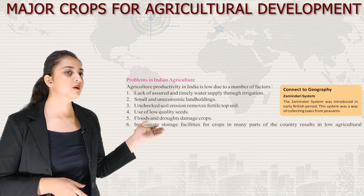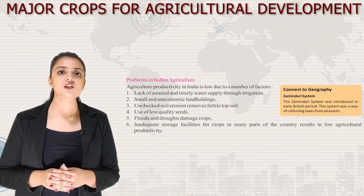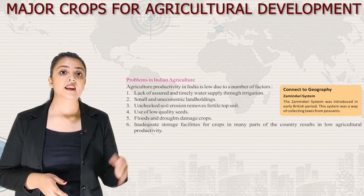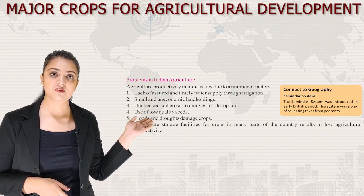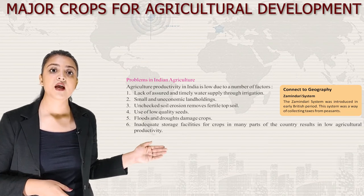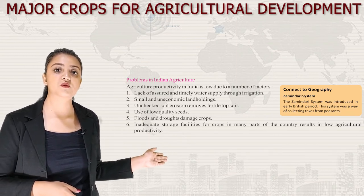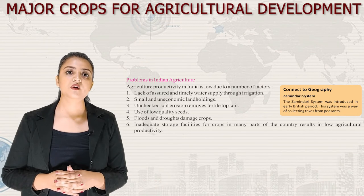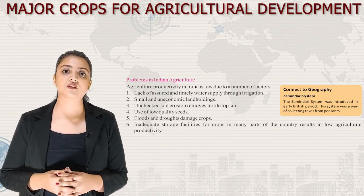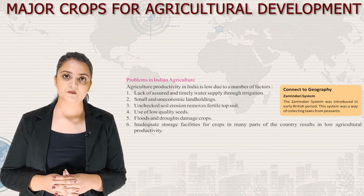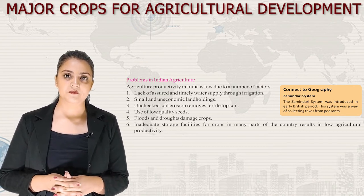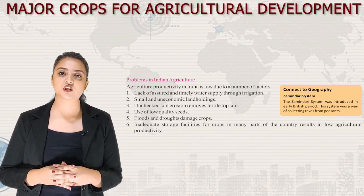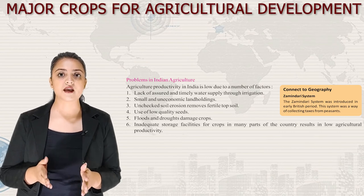Now let's talk about problems in Indian agriculture. Agricultural productivity in India is low due to a number of factors: lack of assured and timely water supply through irrigation, small and uneconomic land holdings, soil erosion removing fertile topsoil, use of low quality seeds, floods and drought damaging crops, and inadequate storage facilities. The Zamindari system, introduced in the early British period, was a way of collecting taxes from peasants.